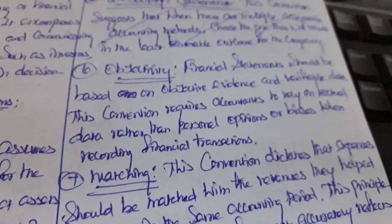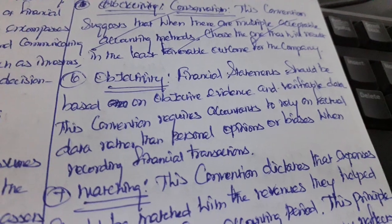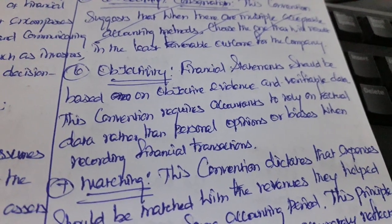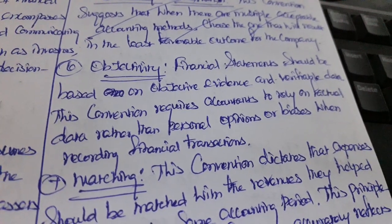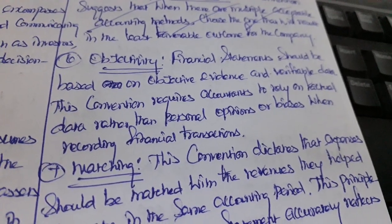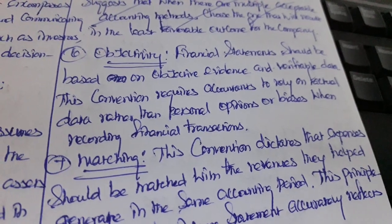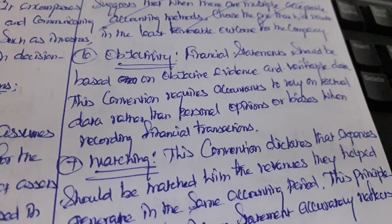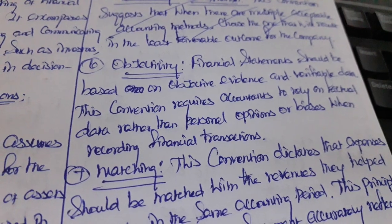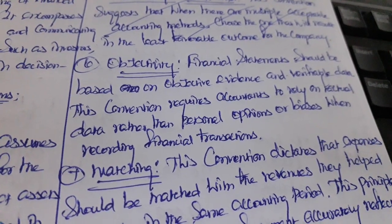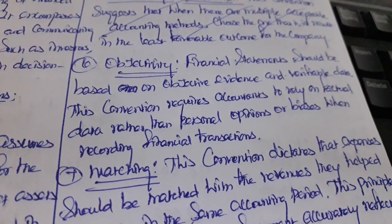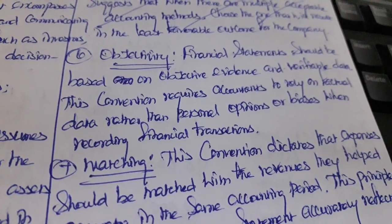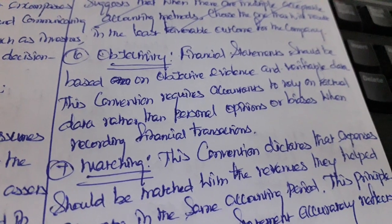The objectivity convention states that financial statements should be based on objective evidence and verifiable data. This convention requires accountants to rely on factual data rather than personal opinions or biases when recording financial transactions. An accountant must check the data with proper evidence and verify that evidence effectively.